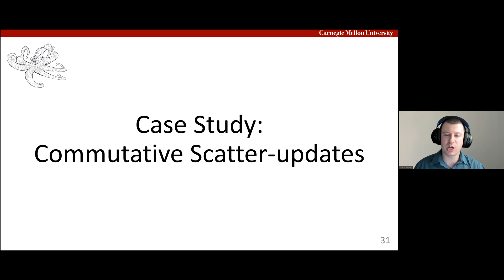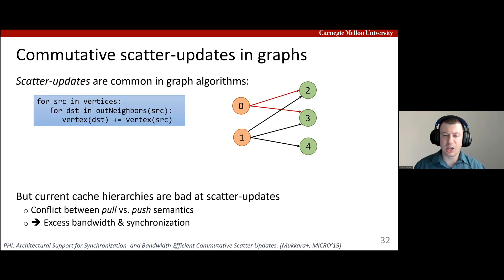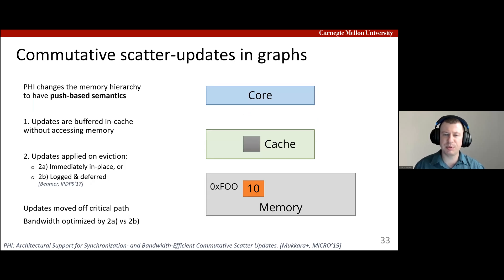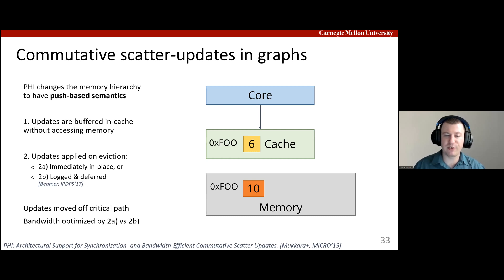Our next example shows how TACO can fundamentally change how the memory hierarchy behaves. Graph algorithms exhibit a common pattern called scatter updates, where each vertex needs to update all its outgoing neighbors. Unfortunately, cache hierarchies are bad at scatter updates due to the pull-based nature of current caches, which bring in data from lower levels when there's a miss, leading to wasted bandwidth and extra synchronization. PHY is a previously proposed specialized hierarchy that changes the memory hierarchy from pull-based to push-based semantics. When a core updates data, instead of loading data from memory, PHY buffers the update in the cache. Subsequent updates are coalesced in the cache, and updates are only applied when evicted. Depending on the number of buffered updates in the cache line, the updates are either applied directly to the data or logged for later processing, which improves spatial locality.